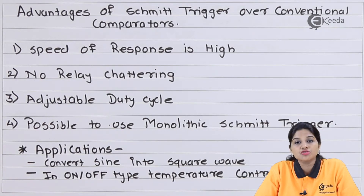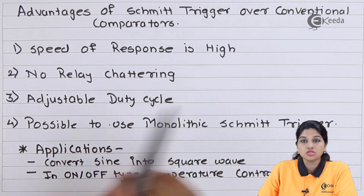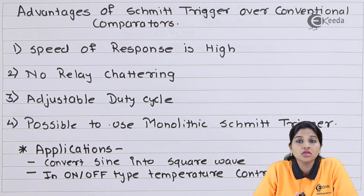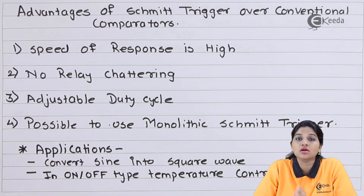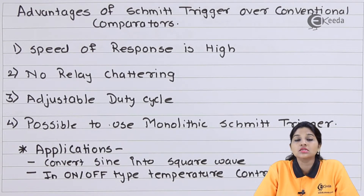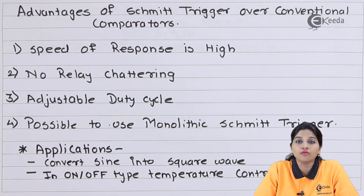The first advantage is that the speed of response is high, as Schmidt trigger uses positive feedback. The speed of operation of the circuit is higher compared to an op-amp in open loop configuration. In a conventional comparator circuit, which uses only open loop configuration, the speed of operation is less. Due to the application of positive feedback, the speed of operation increases in case of Schmidt trigger.